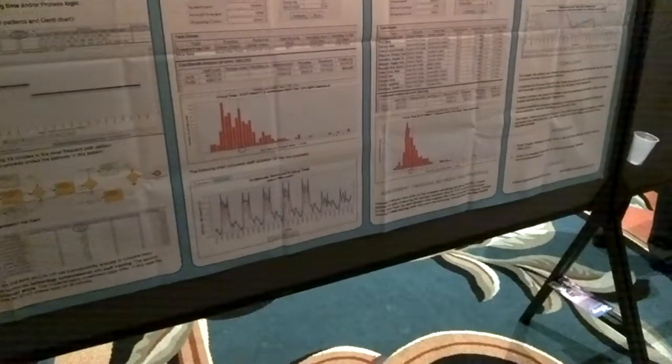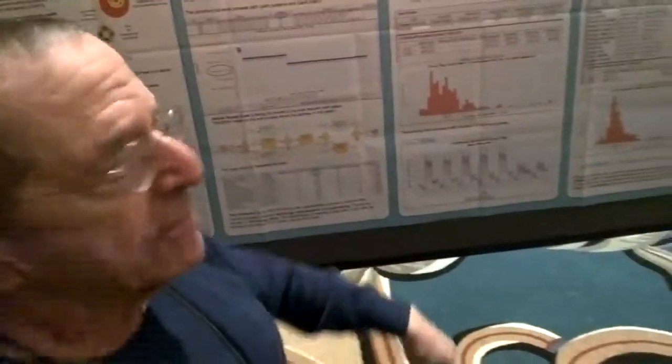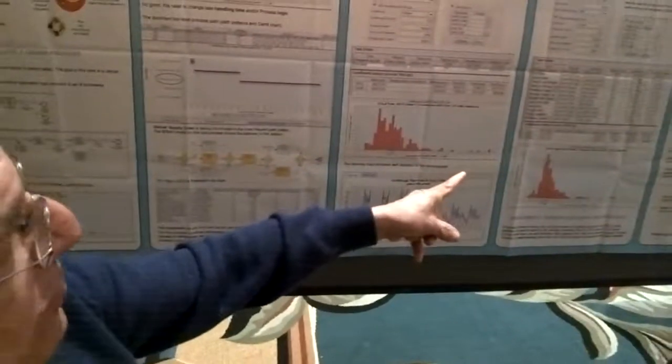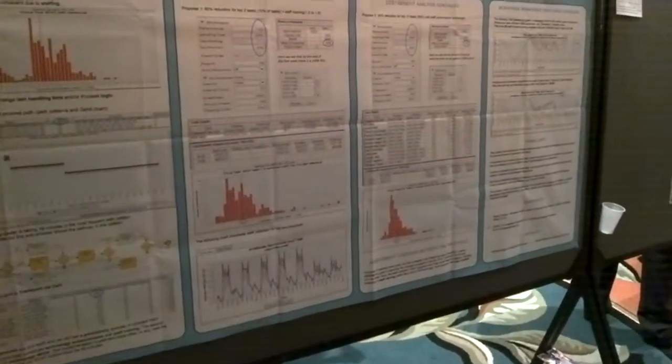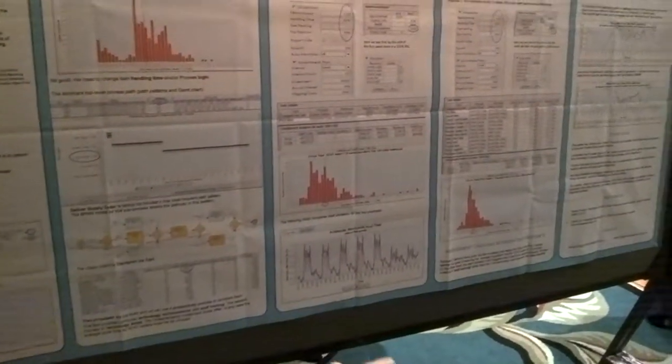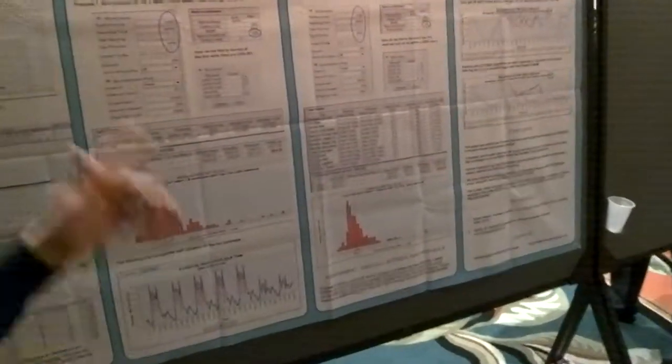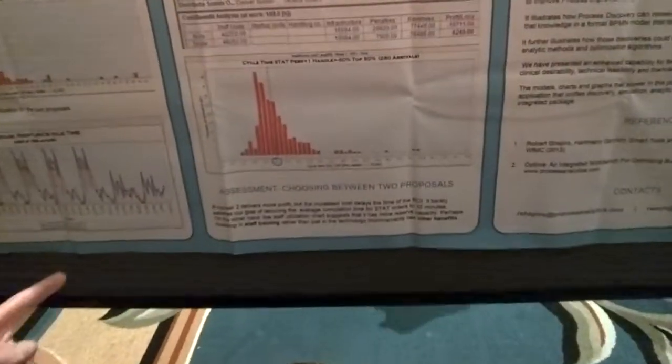These are two different proposals that have been generated. One combines staff training with some technology improvements. The other one is purely technology improvements. It compares the two on a return on investment placement looking at the cost of doing it versus the benefits that you're getting out of it. The proposals are made with the guidance of this information but human beings make the proposals depending on what they sense is important.